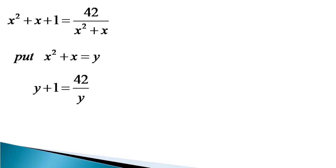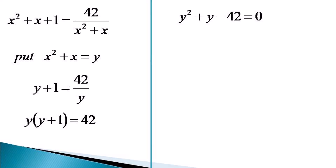Now we can do the cross multiplication, which gives us y into y plus 1 is equal to 42, resulting in a quadratic equation as y squared plus y minus 42 equals 0.